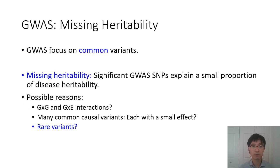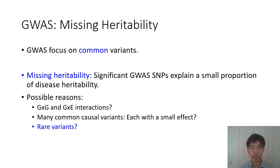A missing heritability is found in most GWAS studies. This is because GWAS often focus on common variants, and most significant GWAS findings can only explain a small proportion of disease heritability. There are multiple reasons behind that. First, it can be because of G-by-G or G-by-E interactions.